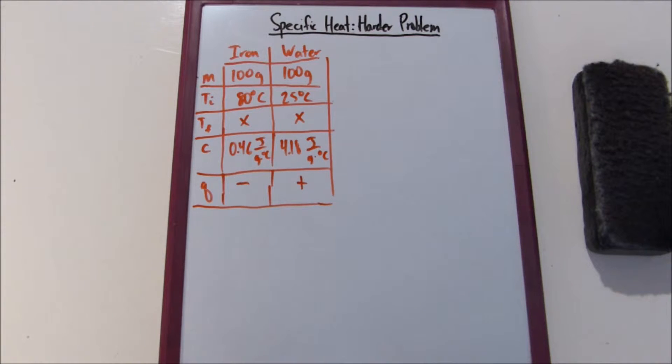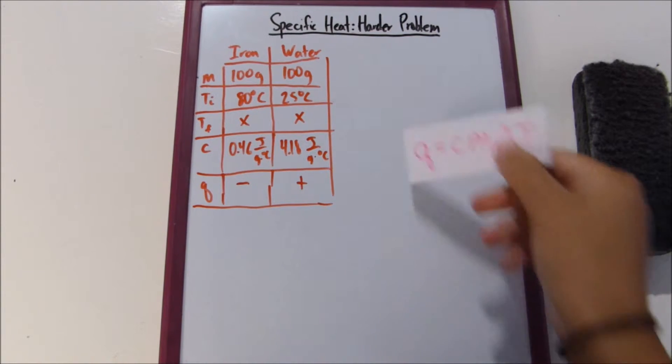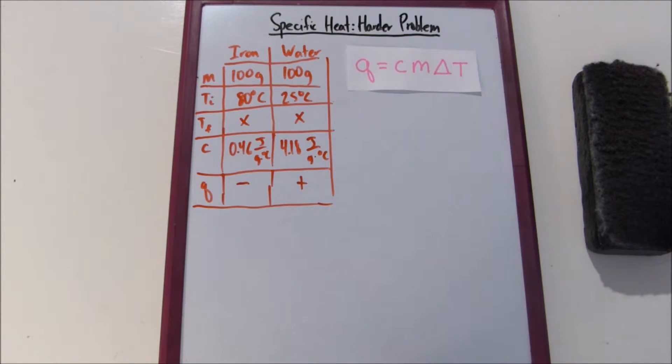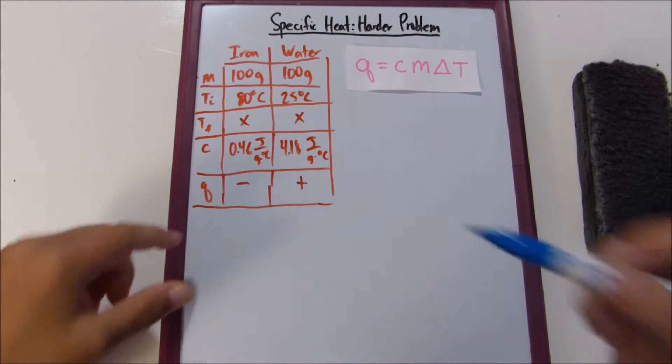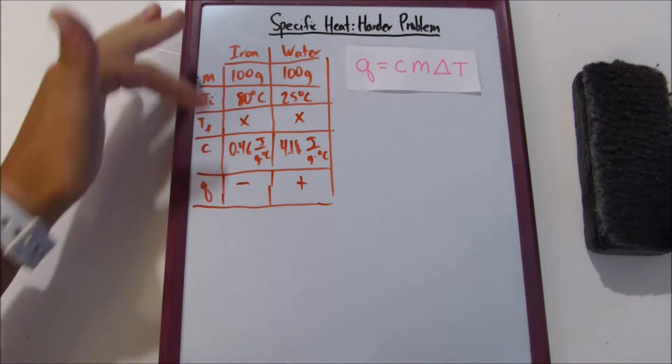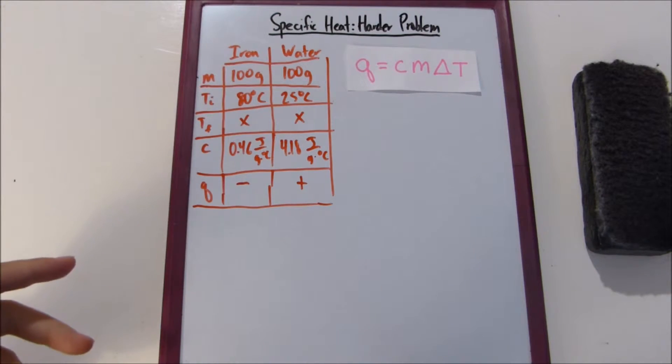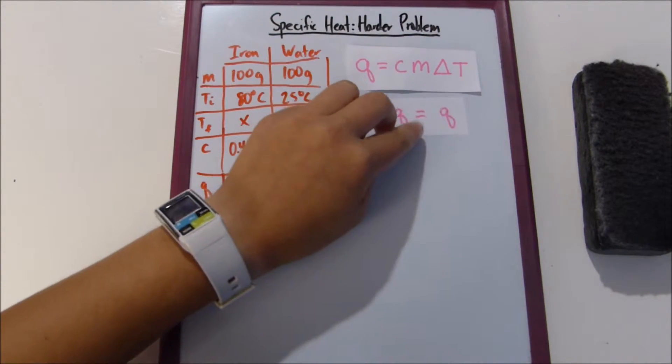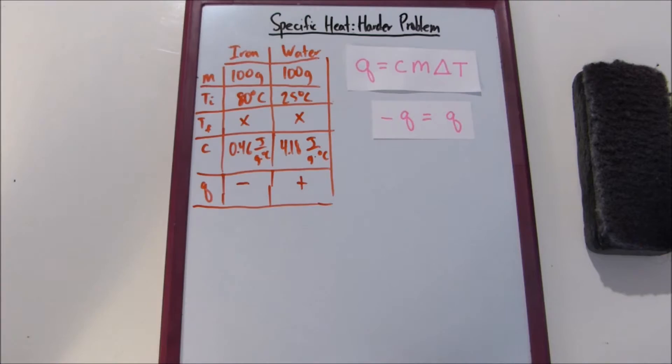So then what we can do is we can use our handy-dandy little equation that we used in the last video. But what we're going to do is we're going to set up both sides of it, but then for the iron side, we're just going to make everything negative. Because that's negative Q equals Q. Everything on the water side is going to stay positive.